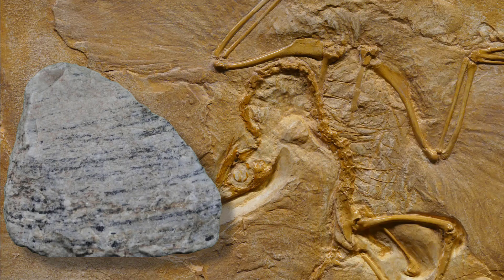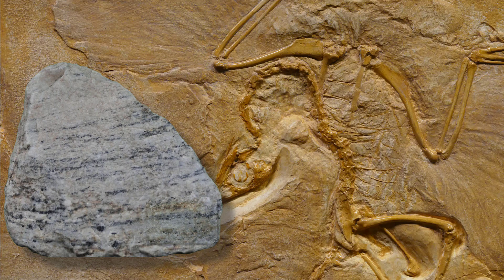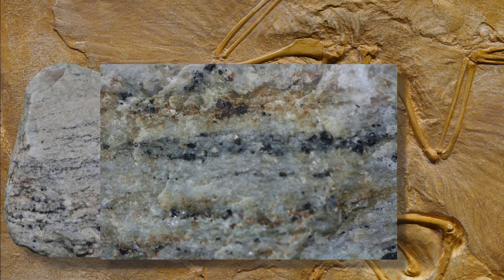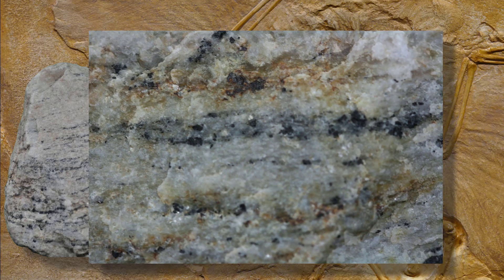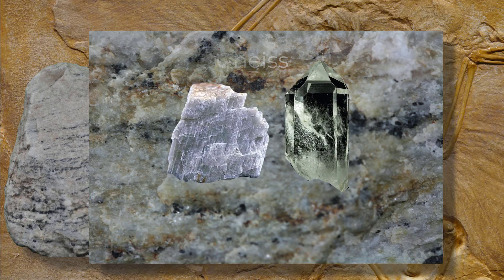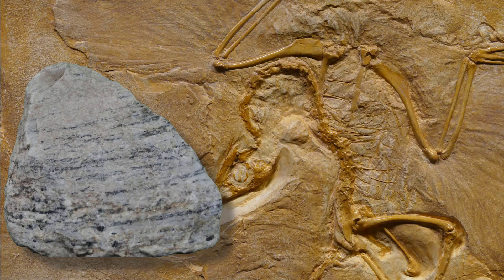The highest grade metamorphic rock is called gneiss, because the minerals in the rock are completely different from the parent rock. Gneiss possesses a very distinctive black and white banding, which results when less dense and lighter minerals like quartz and feldspar separate from denser and darker minerals like biotite and amphibole.